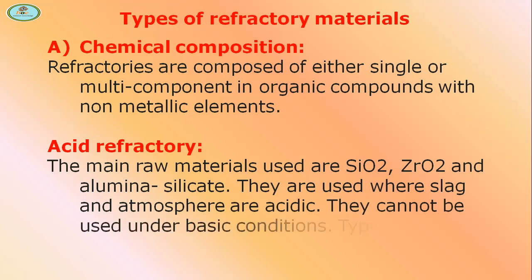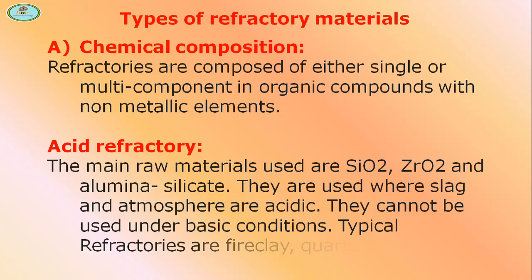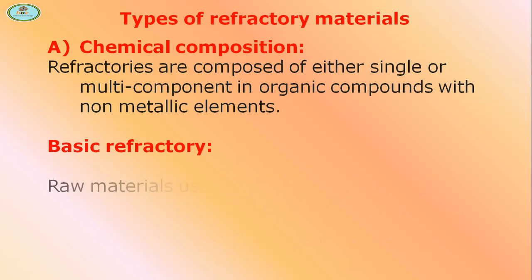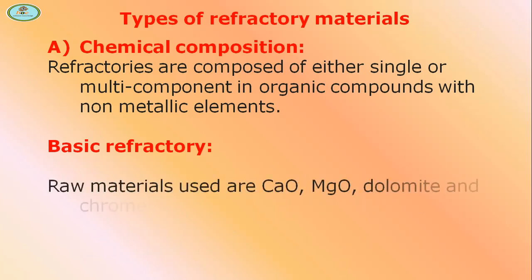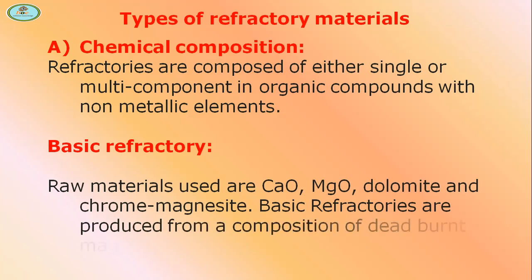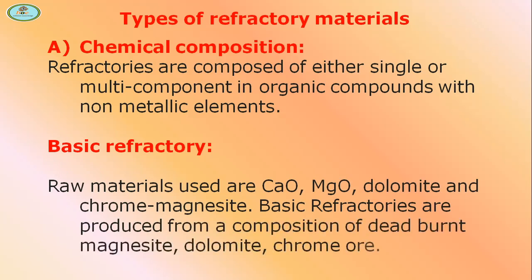Typical acid refractories are fire clay, quartz, and silica. Basic refractory raw materials used are CaO, MgO, dolomite, and chrome magnesite. Basic refractories are produced from a composition of dead-burned magnesite, dolomite, and chrome ores.